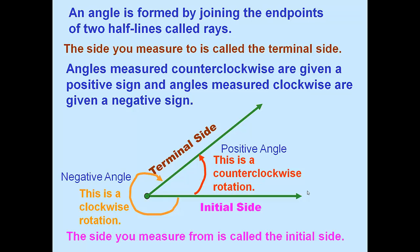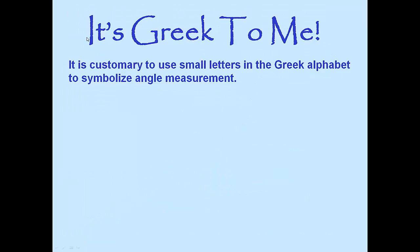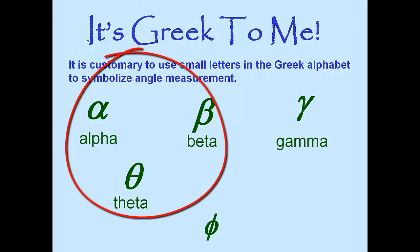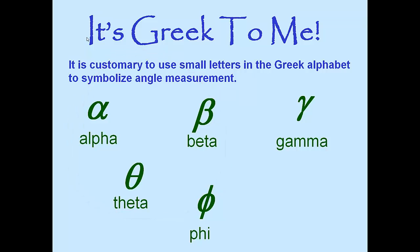So the red angle here is positive — counterclockwise. We're going to use Greek letters to signify angles. The ones you're going to use in this class are alpha, beta, and theta. But you can also see gamma, phi, and delta.